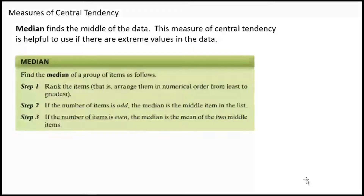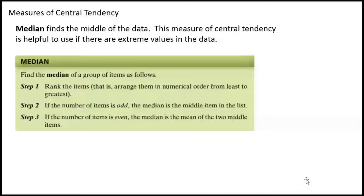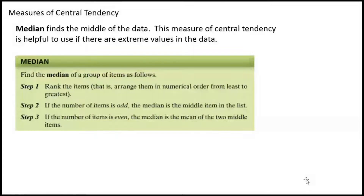To find the median of a group of items: first, rank the items — put them in numerical order, smallest to largest. Second, if the number of items is odd, the median is the middle item in the list. If the number is even, then half your data goes on one side and half on the other, and you find the mean of the two middle items — you average the two guys in the middle.